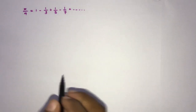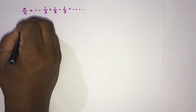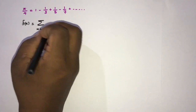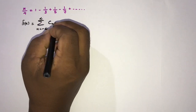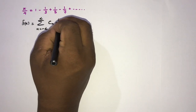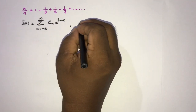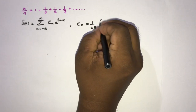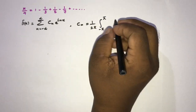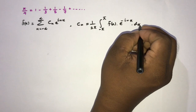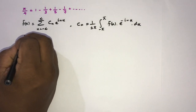We know f(x) is equal to the sum from n equals minus infinity to infinity of c_n, the complex Fourier coefficient, times e to the inx. And c_n is equal to 1 over 2π times the integral from minus pi to pi of f(x) times e to the minus inx dx. Now let's take f(x) equal to x.